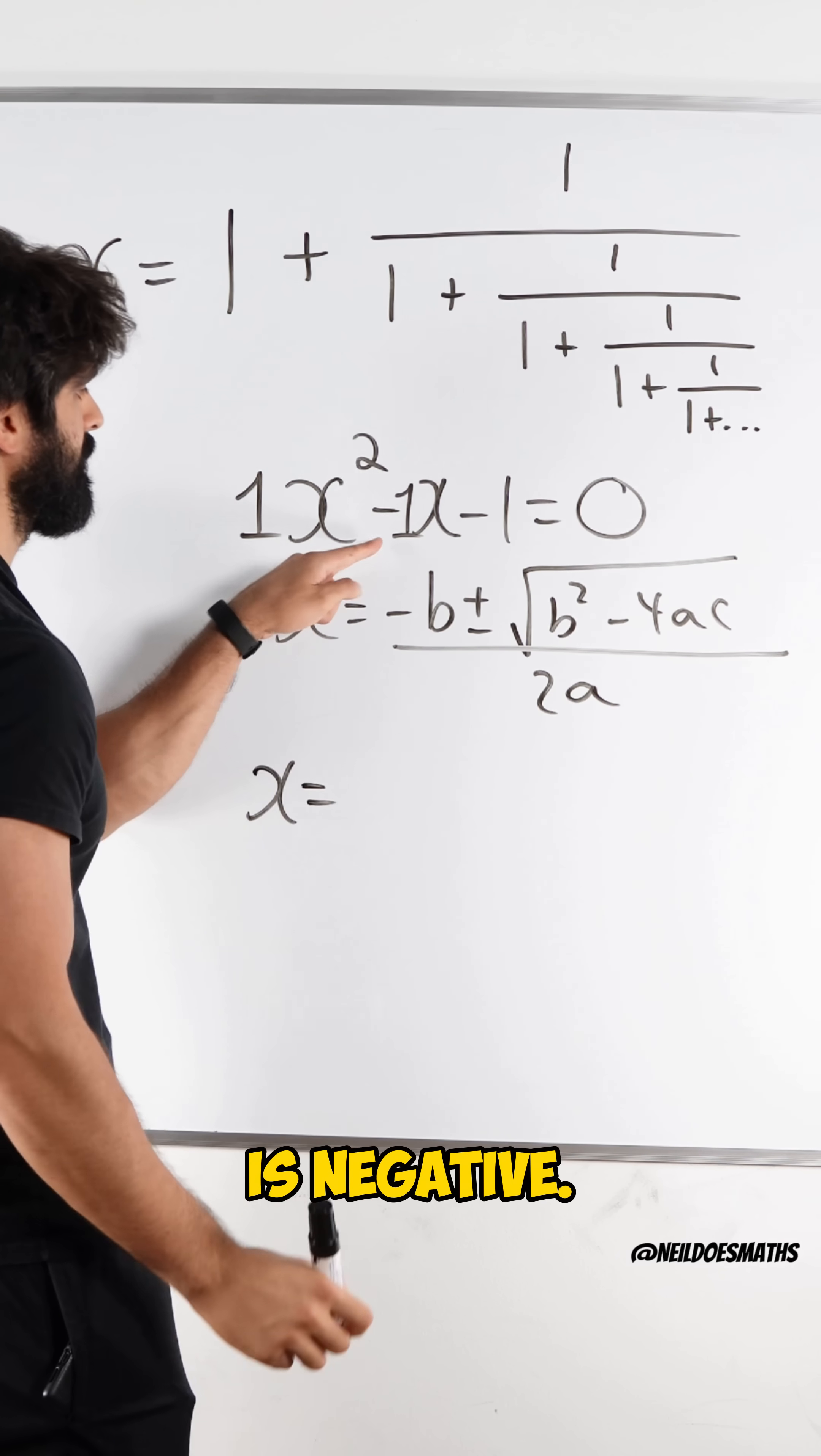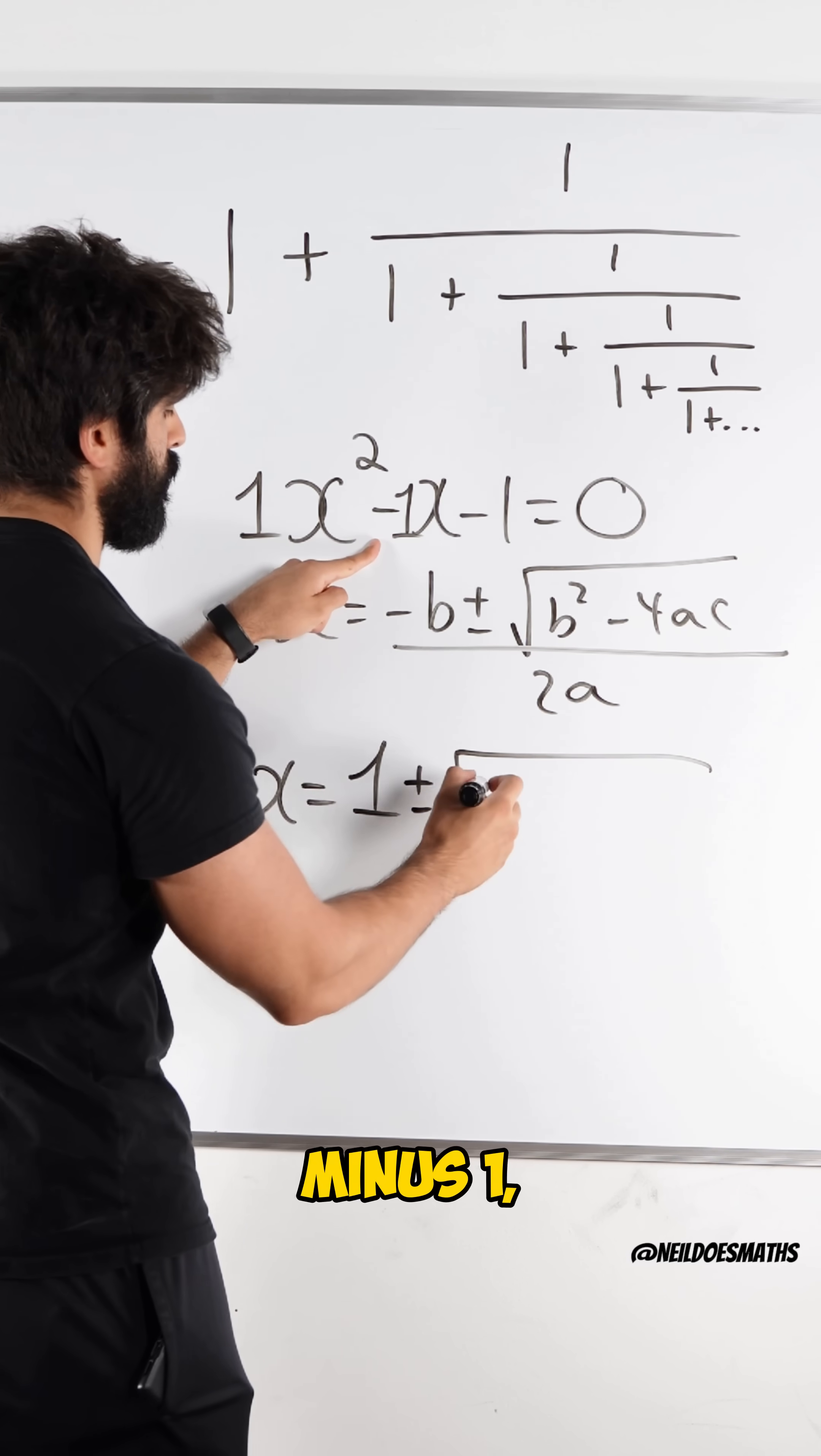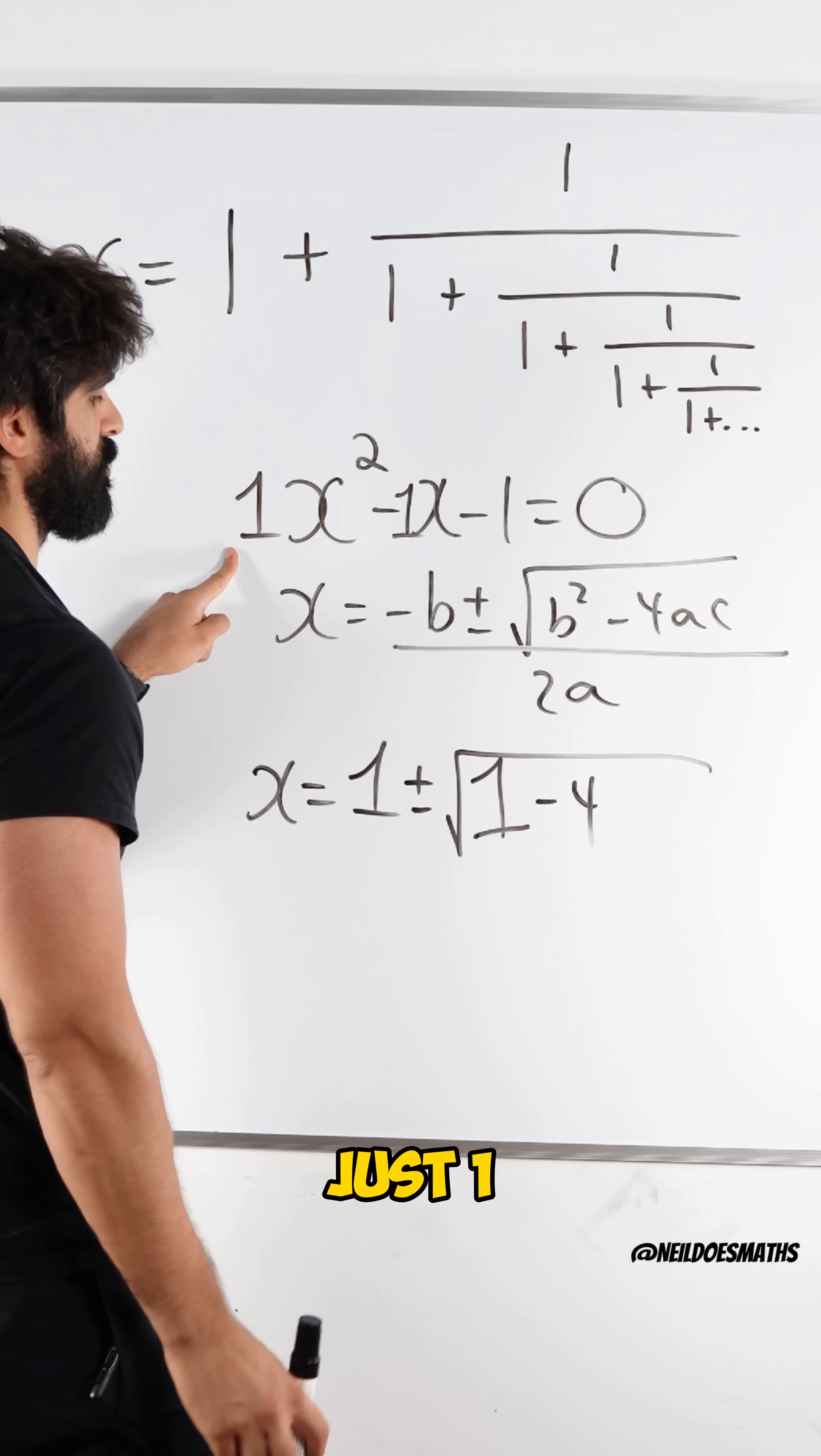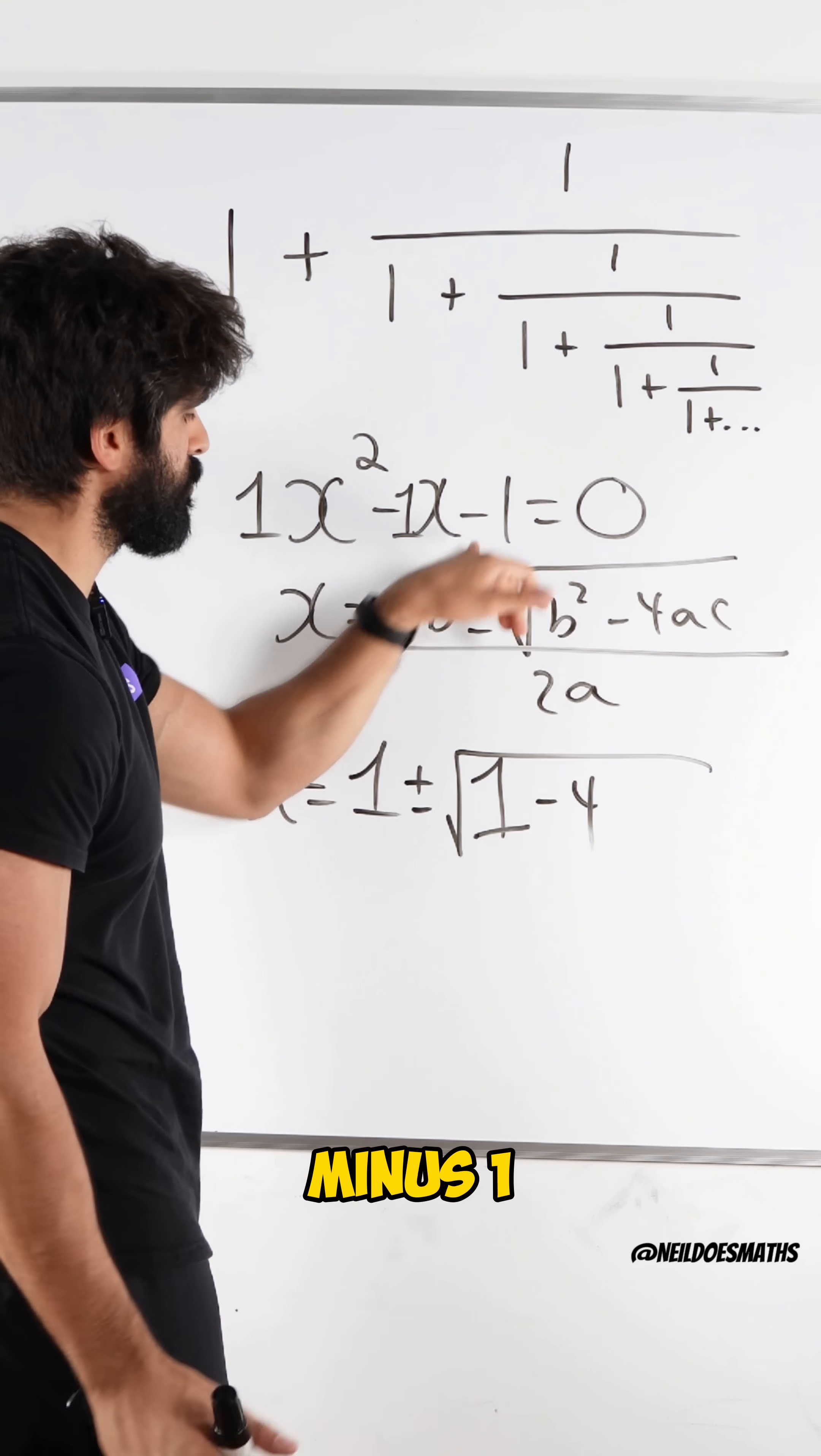So x is negative b, which is just 1, plus or minus root of b squared. When you square minus 1, you get 1 minus 4 times a, which is just 1. Minus 4 times 1 is just minus 4. Times c. But c being minus 1, minus 4 times minus 1 is plus 4.